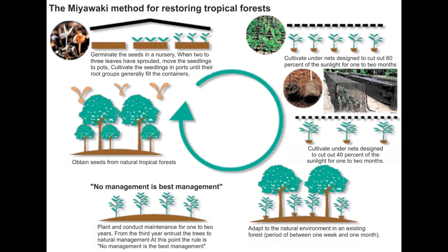Step 3: Sapling procurement. Find appropriate suppliers. Assess quality at source and match it with quality standards defined. Create a robust supply chain and finalize logistics. Ensure proper stocking and handling on site. Assess root zones of seedlings and ensure they are as per quality standards required for Miyawaki method. Fully developed root zones are essential, along with healthy shoots. Check propagation methods and ensure they are as per quality standards required for Miyawaki method.